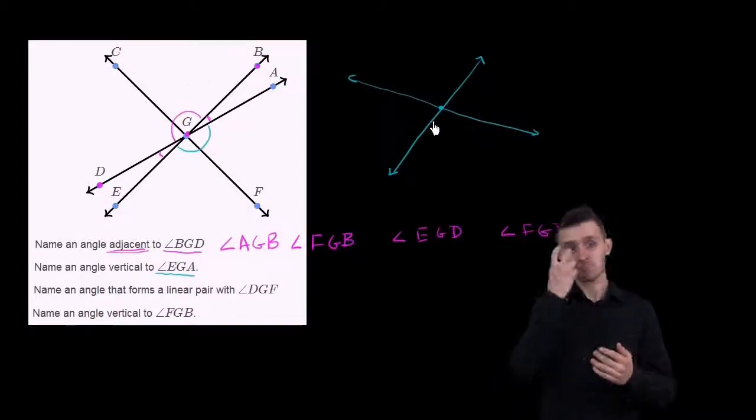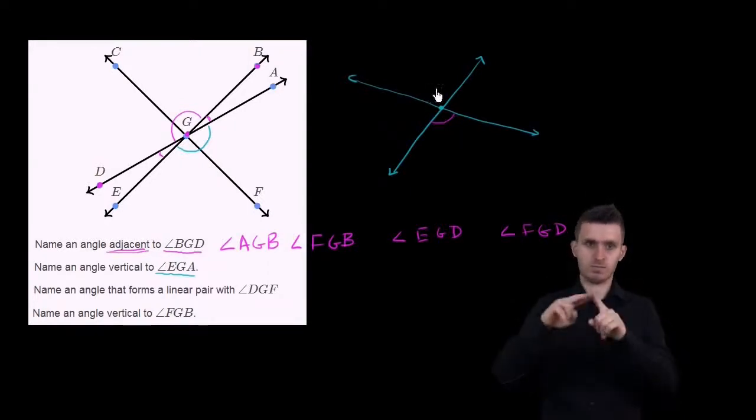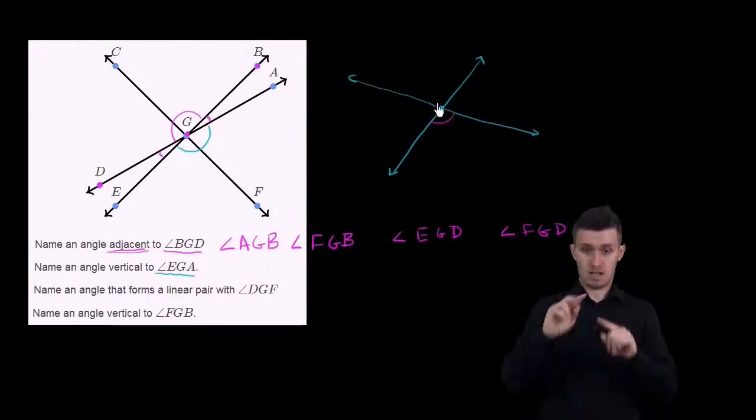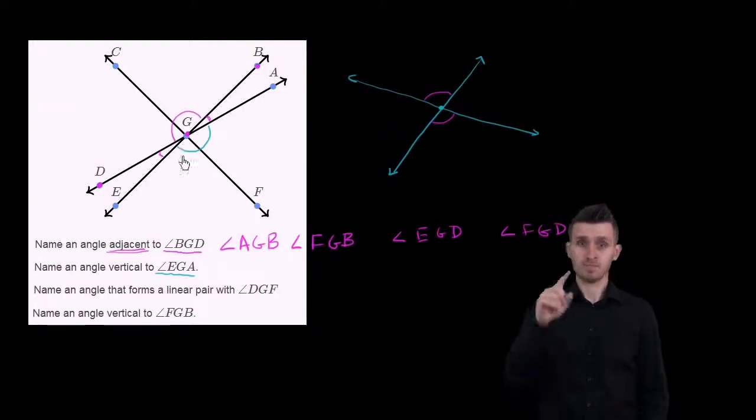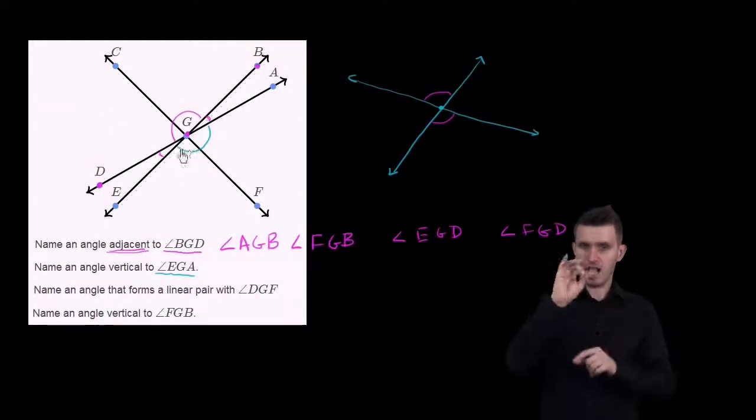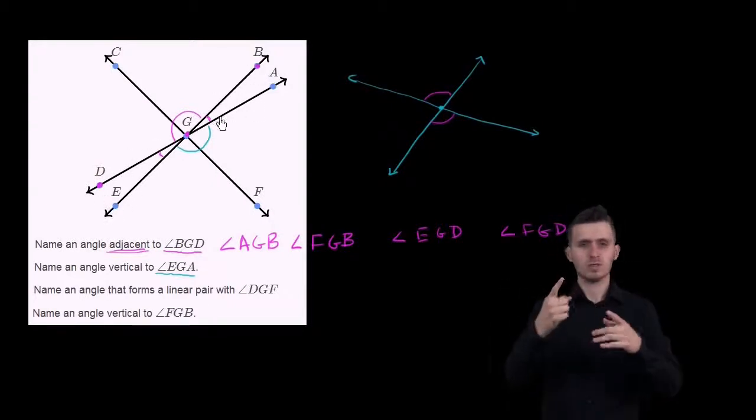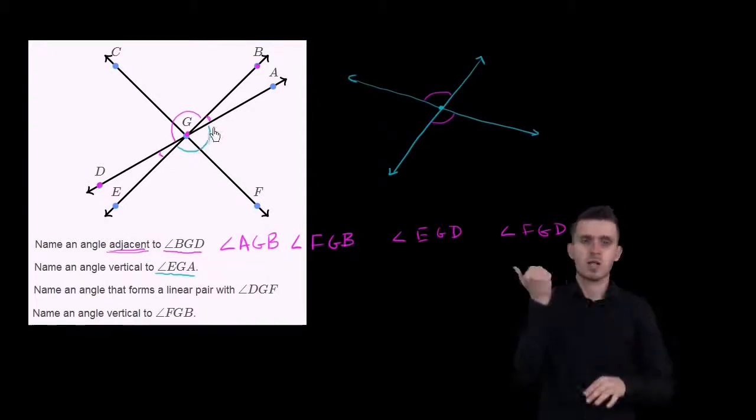This is forming four angles, or two sets of vertical angles. If this is the angle you care about, its vertical angle is the one on the opposite side of the intersection - one of the angles that is not adjacent to it. So it would be this angle right over here. Going back to the question, a vertical angle to angle EGA - if you imagine the intersection of line EB and line DA,